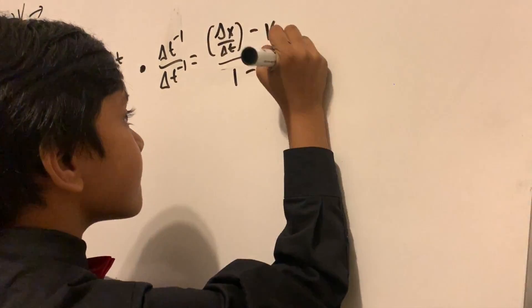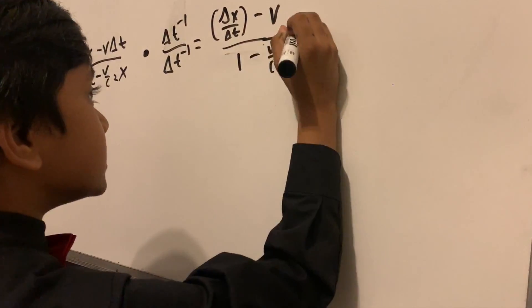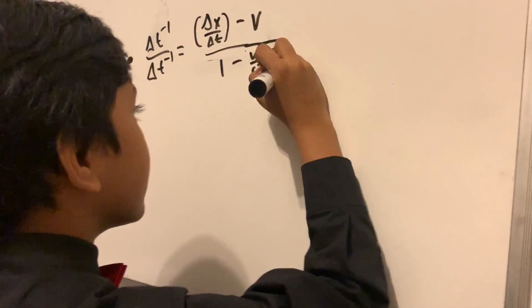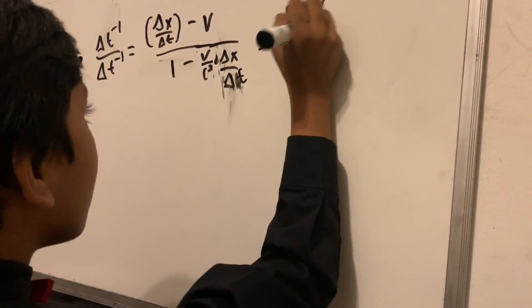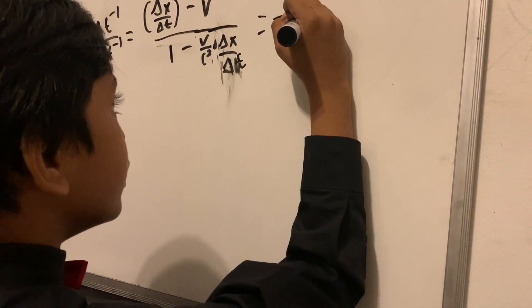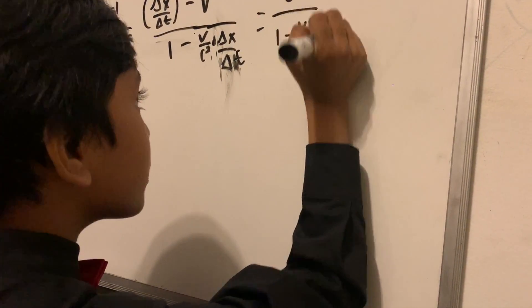Which adds up to u ultimately. So we have u minus v over one minus uv over c squared, which should be the correct equation for anything you have.